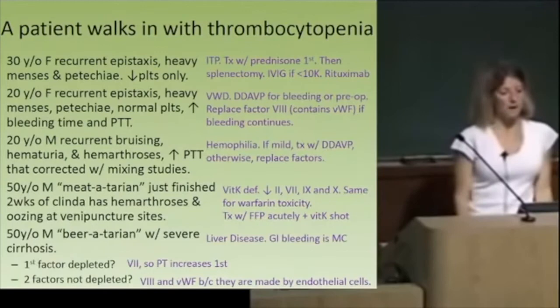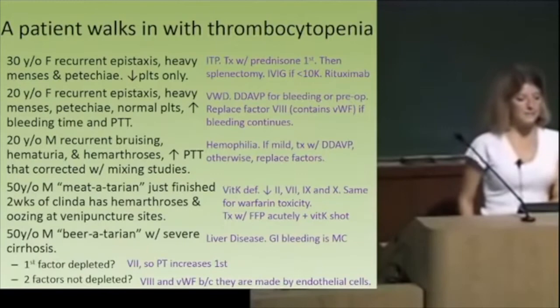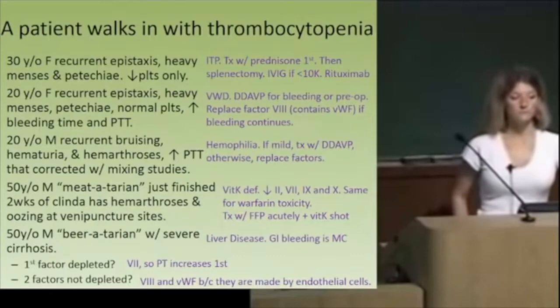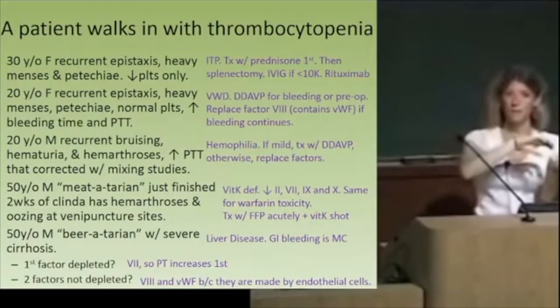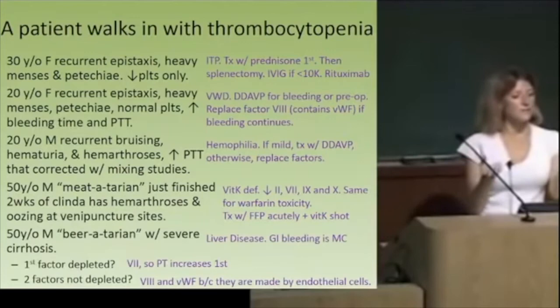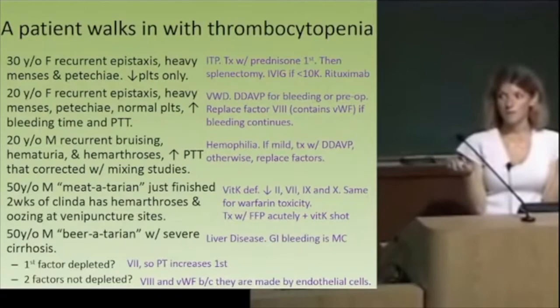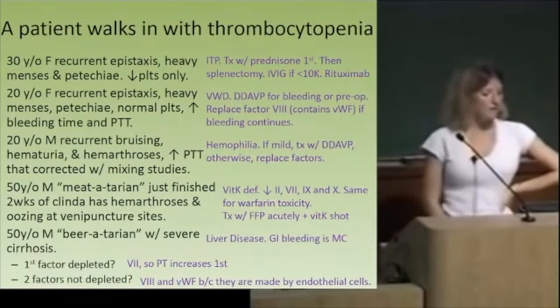A 20-year-old male with recurrent bruising, hematuria, hemarthroses, and elevated PTT that corrects with mixing studies — that's hemophilia. Mixing studies: if you've got a problem with PTT and you mix it with normal blood and it corrects, something was missing in the patient's blood. If you mix and it still doesn't correct, there's an inhibitor present — even if you add the factor, the inhibitor in the patient's blood will block it.